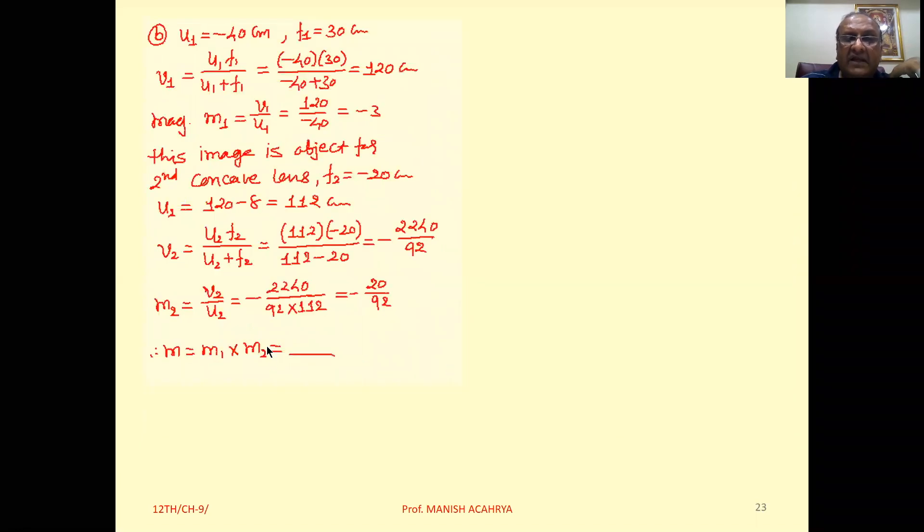Now we want to calculate magnification. U1 is minus 40 as given. For the convex lens, focal length F1 is 30 centimeter. So V1 equals U1 F1 upon U1 plus F1. Substituting values: minus 40 times 30 upon minus 40 plus 30, you will get the answer 120.